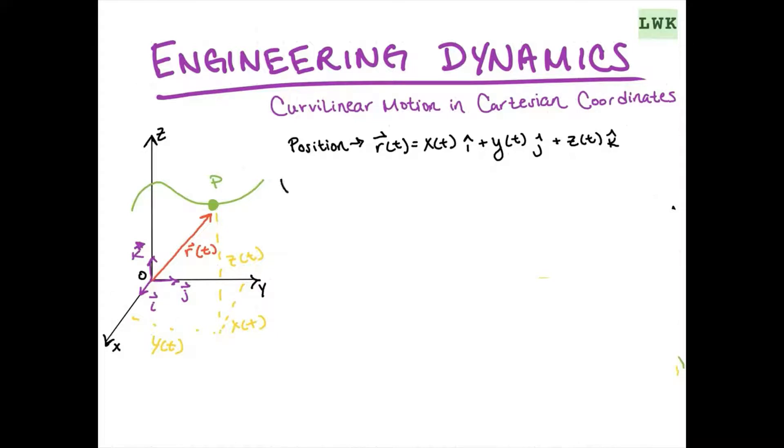Velocity, we know, is the derivative of the position with respect to time. So we can write that as d/dt of x(t)i plus d/dt of y(t)j plus d/dt of z(t)k.